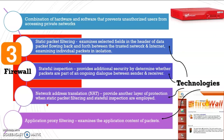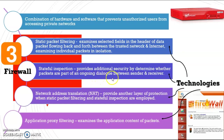The firewall has four items. First, we have static packet filtering — it filters what flows back and forth between the trusted network and the internet; you must ensure it is trustworthy. Second, stateful inspection provides additional security by determining whether packets are part of an ongoing dialogue between sender and receiver, to ensure there are no intruders during communication.